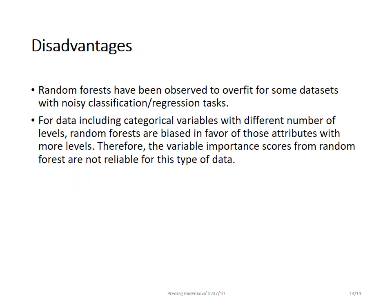What are the disadvantages? Random Forests have been observed to overfit for some datasets with noisy classification and regression tasks. Why? Because if we repeatedly reselect a single data point across different bootstrap samples, there is a chance of overfitting. The second point is that for data including categorical variables with different numbers of levels, Random Forests are biased in favor of attributes with more levels — if a selected feature has many categories and levels, the result will be dependent on the number of levels. This is the disadvantage of Random Forest.